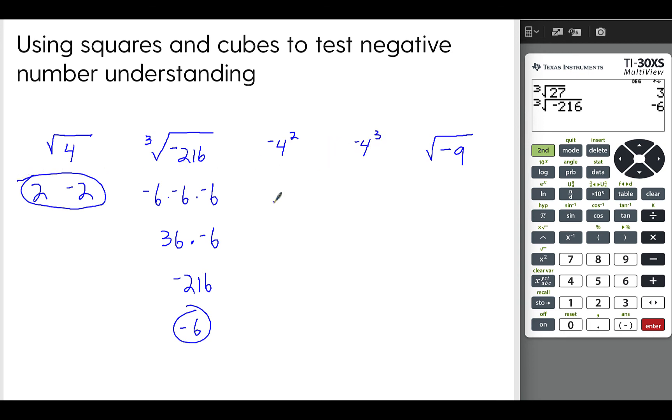So negative 4 squared, remember 4 times 4 is 16. And negative 4 times negative 4 is also 16.